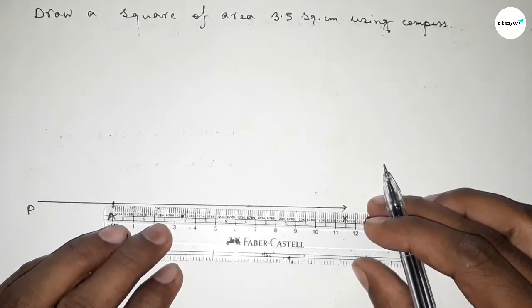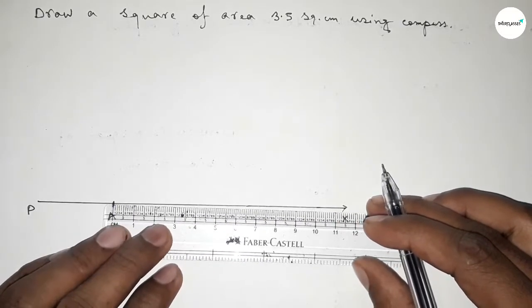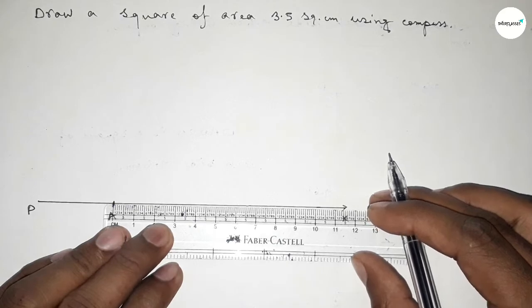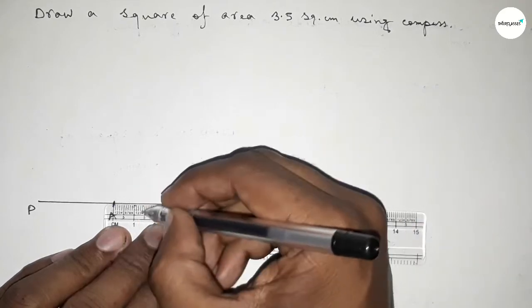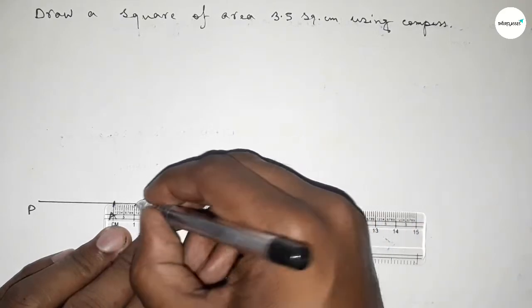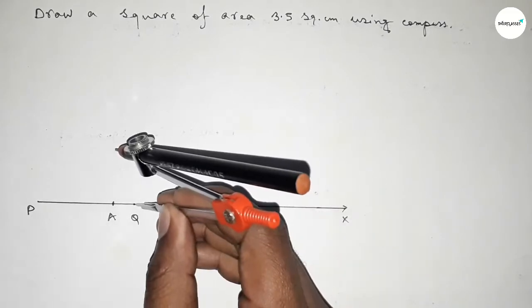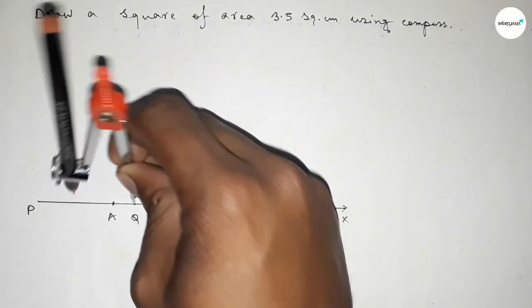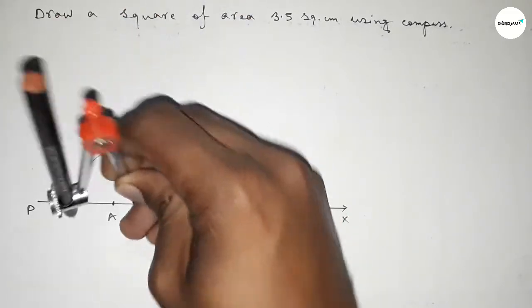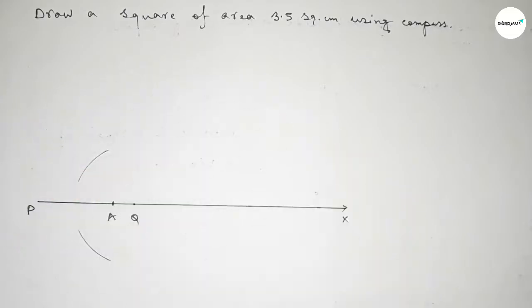Next, taking another line of length one centimeter from point A and marking here point Q. Now we have to bisect the line PQ, so putting the compass on point Q and taking a length greater than half of PQ.